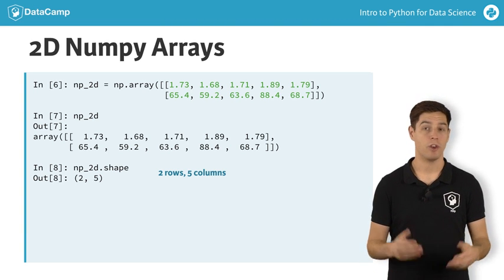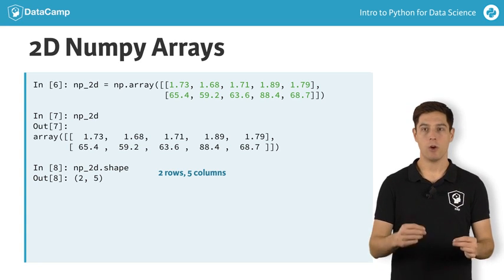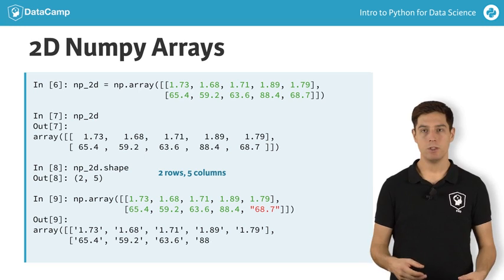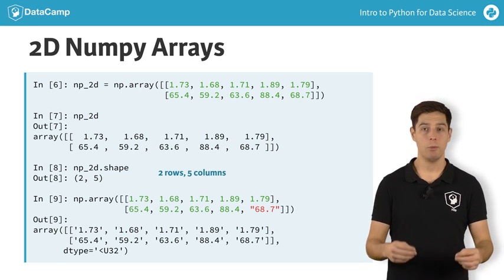Also for 2D arrays, the numpy rule applies. An array can only contain a single type. If you change one float to be a string, all the array elements will be coerced to strings as well, to end up with a homogeneous array.